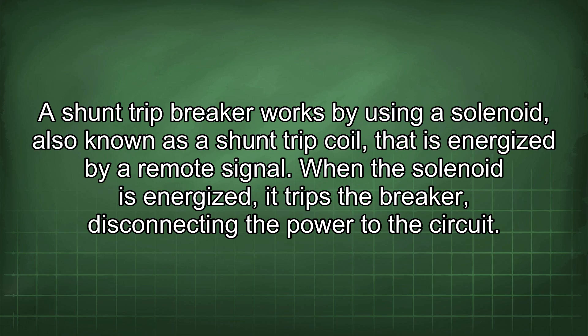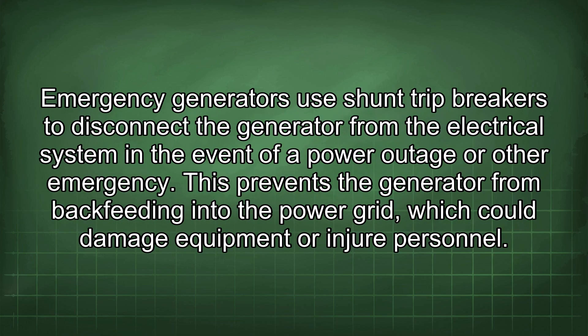When the solenoid is energized, it trips the breaker, disconnecting the power to the circuit. Emergency generators use shunt trip breakers to disconnect the generator from the electrical system in the event of a power outage or other emergency.